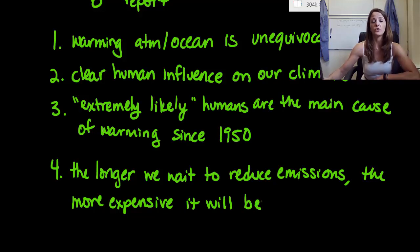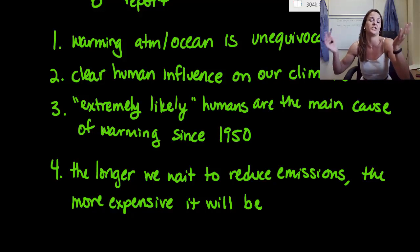And here's why they included that last one. A lot of companies' arguments are this is crippling. If we have to reduce our amount of carbon dioxide or whatever pollutant we're talking about, the number of emissions, it's going to cripple our business. It's going to cut us down. There's no way we can do this. And the IPCC is saying, look guys, it doesn't matter. The longer we wait, it's going to be more and more expensive. We can't just stop right now. We have to figure out a way to reduce emissions and you can no longer use money or budget as an excuse.